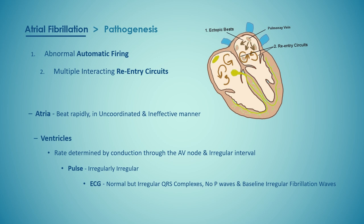The ECG shows normal but irregular QRS complexes. There are no P waves, but the baseline may show irregular fibrillation waves.